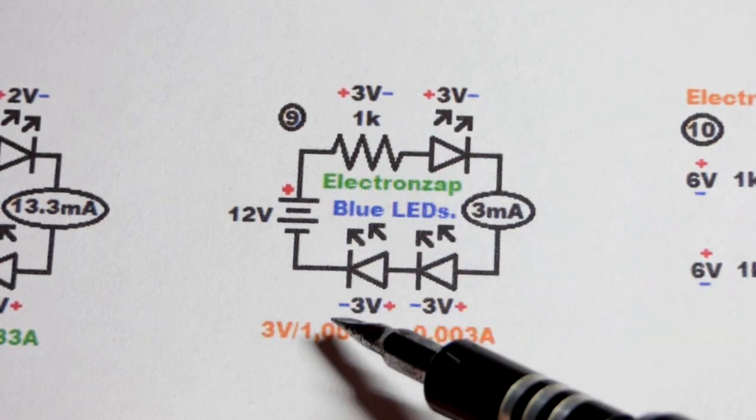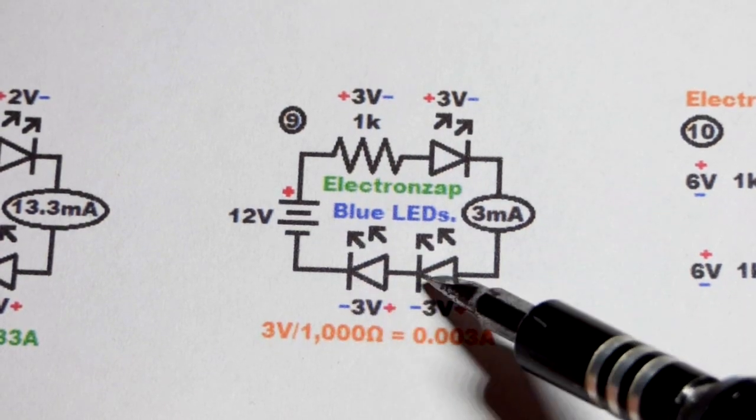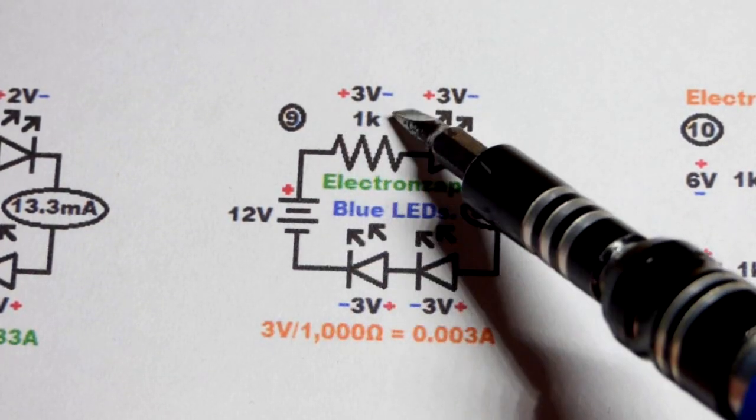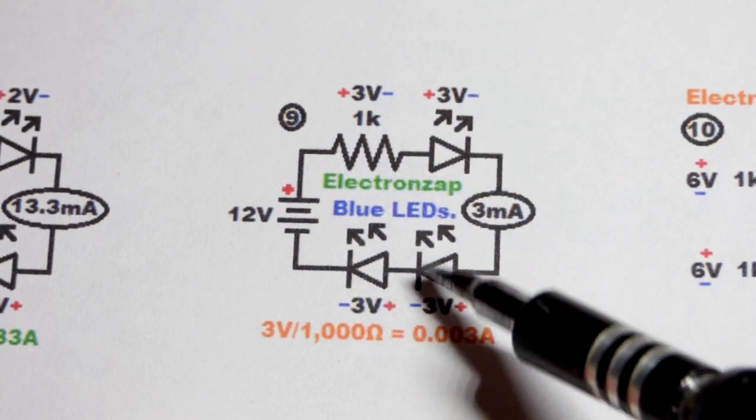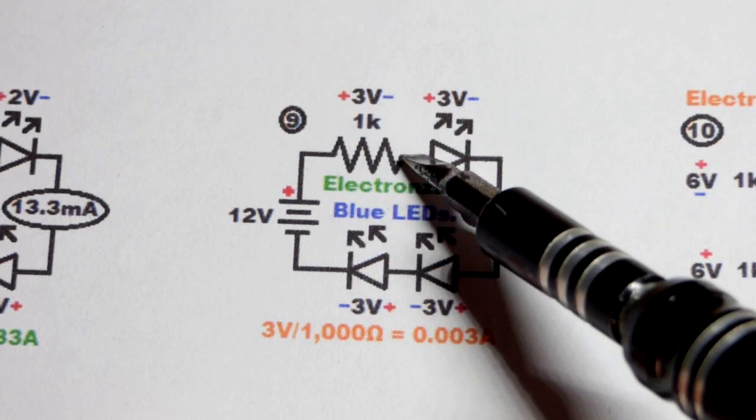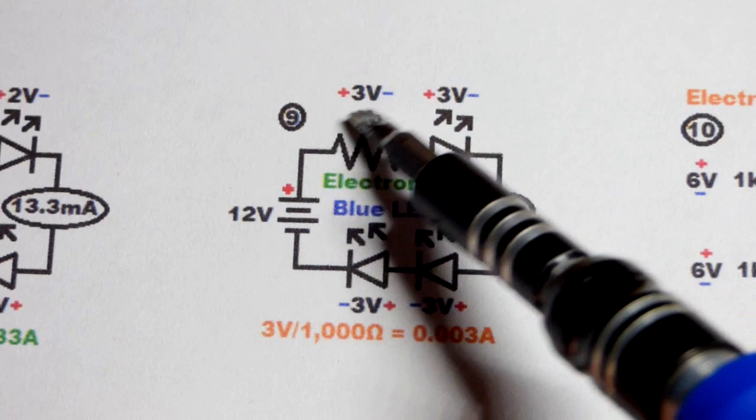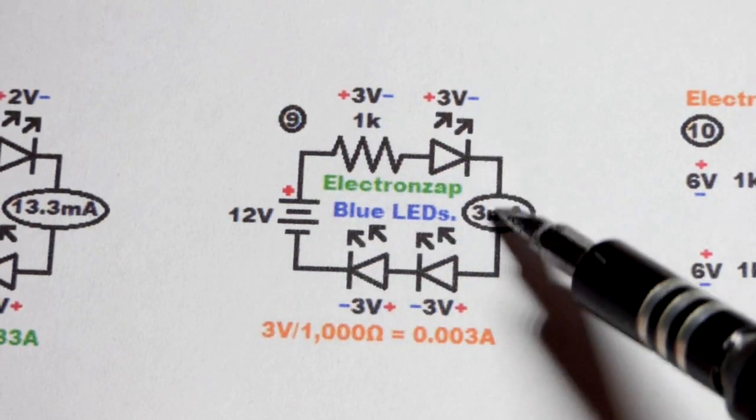So when it comes to the current setting resistor, it will drop three, six, nine volts out of that twelve, so we'll have three volts left for the resistor. Blue LEDs get pretty bright at low current, so we'll just take a 1,000 ohm resistor right here. It's only gonna have three volts across it, won't get hot at all, and three milliamps of current will flow through the circuit.